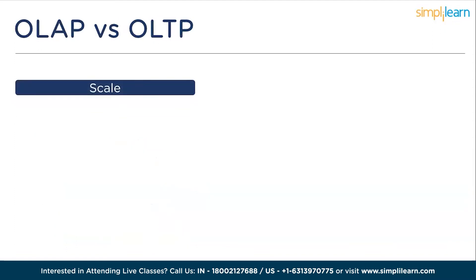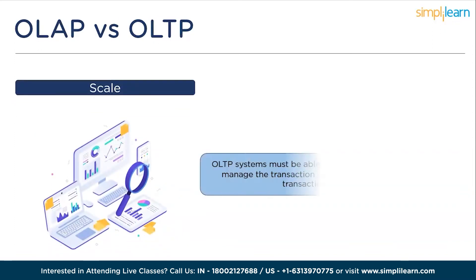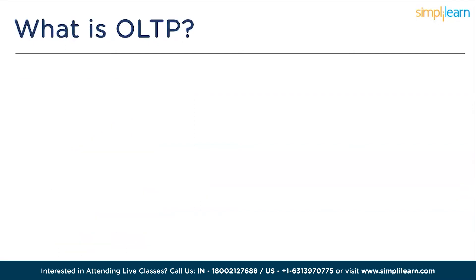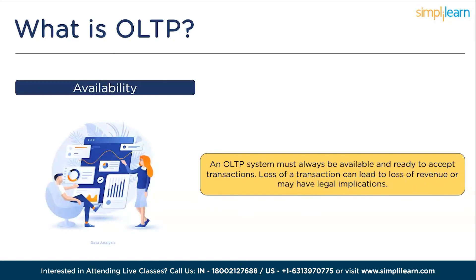The next characteristic is scale. OLTP systems must be able to scale up and scale down instantaneously to manage transaction volume in real time and execute transactions concurrently, irrespective of the number of users trying to access the system. Moving ahead, the next one is availability. An OLTP system must always be available and ready to accept transactions. Loss of a transaction can lead to a loss of revenue or may have legal implications. Because transactions are executed from anywhere in the world at any time, the system must be available 24/7.